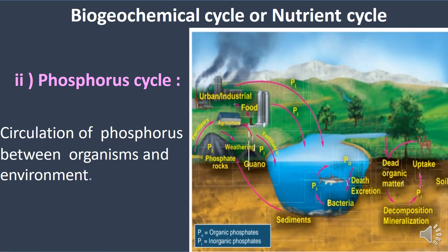Next is the phosphorus cycle — a type of sedimentary cycle. The phosphorus cycle is the circulation of phosphorus between organisms and the environment. Phosphorus is part of biomolecules including DNA, RNA, ATP, and NADP. NADP stands for nicotinamide adenine dinucleotide phosphate and is a co-enzyme involved in metabolic processes such as photosynthesis and respiration.